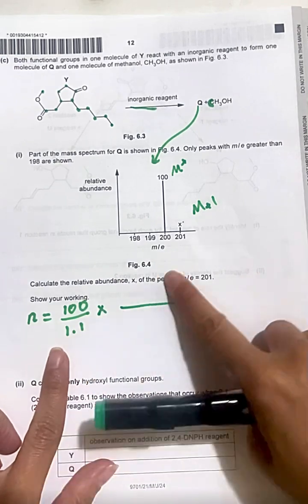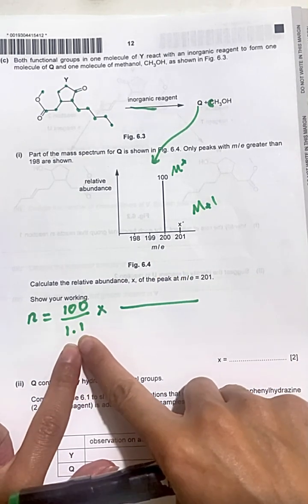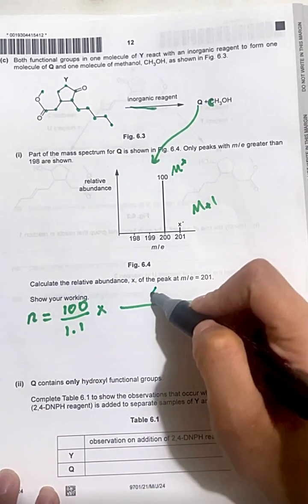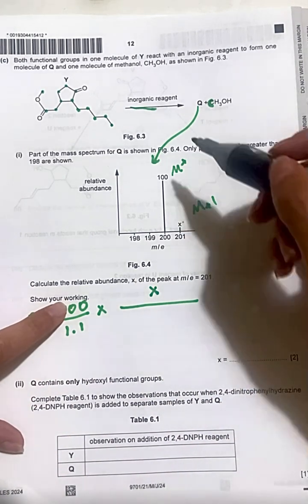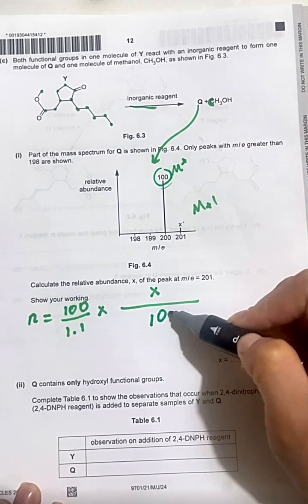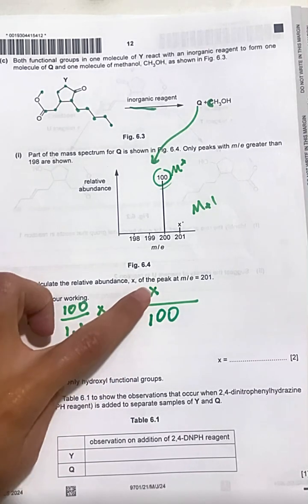Now, cross multiplication, the relative abundance for M plus 1, which is this, it is unknown, X, divided by the relative abundance of the original carbon, which is 100. The question is asking to find X.